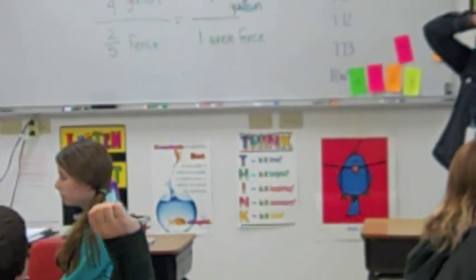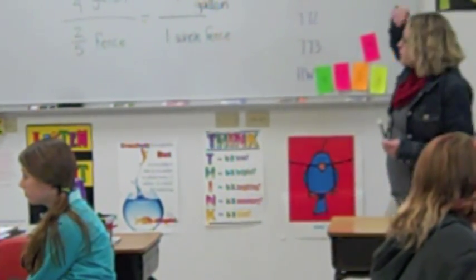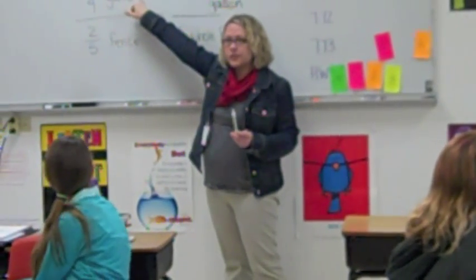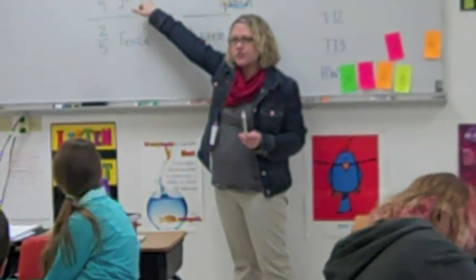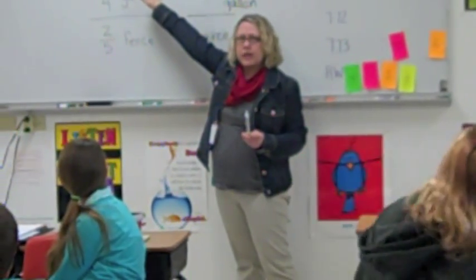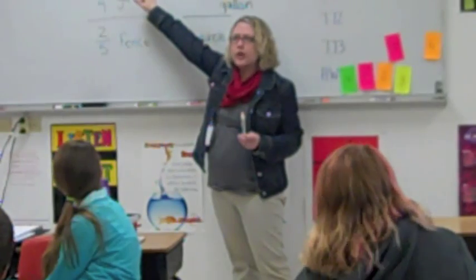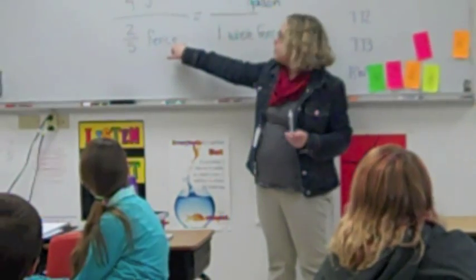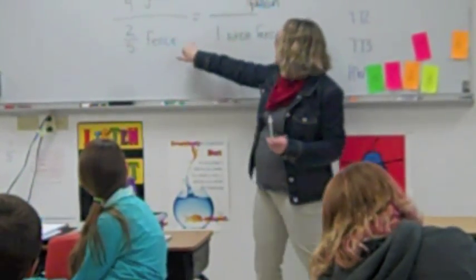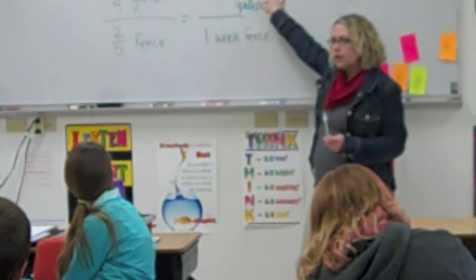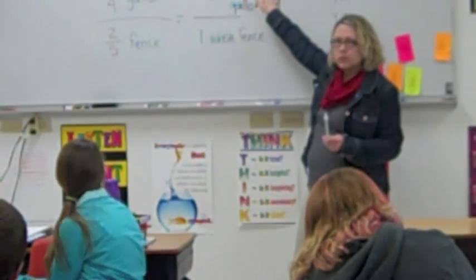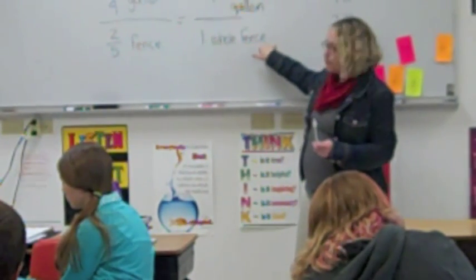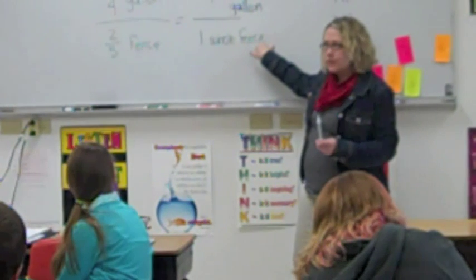Gabrielle — gallons to fence. So in this ratio, I put my gallons on the top. What's the top part of this called again, using our math vocabulary? The numerator. So I have my gallons in the numerator, and then I have what in the denominator? Fence. So gallons in the numerator, fence in the denominator. And then over here, how did I set this ratio up? The same way — gallons in the numerator and the fence part in the denominator, because this is what I'm comparing.